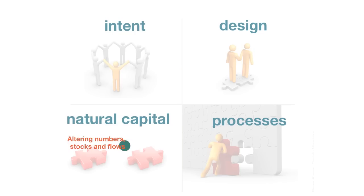Within the natural capital domain, one could increase the area of farmland. That falls in the category of altering numbers, stocks, and flows. While that may temporarily provide more food, it does little to change the prospects of farming as a career.